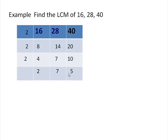Now 2, 7 and 5 — these numbers do not have any common factor, so the factorization ends here. Now we will write the LCM of 16, 28 and 40.